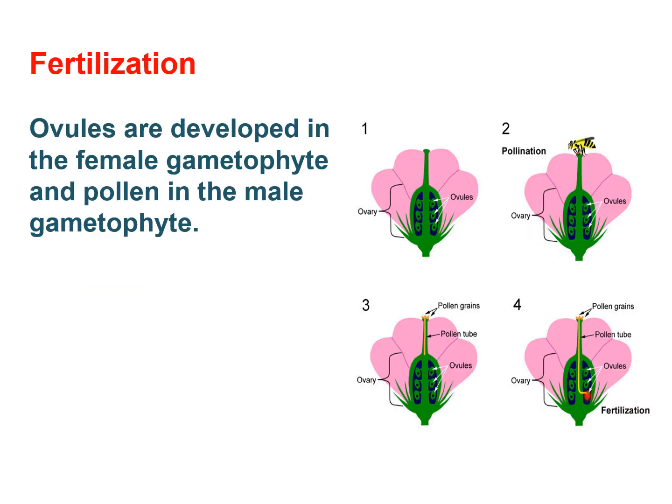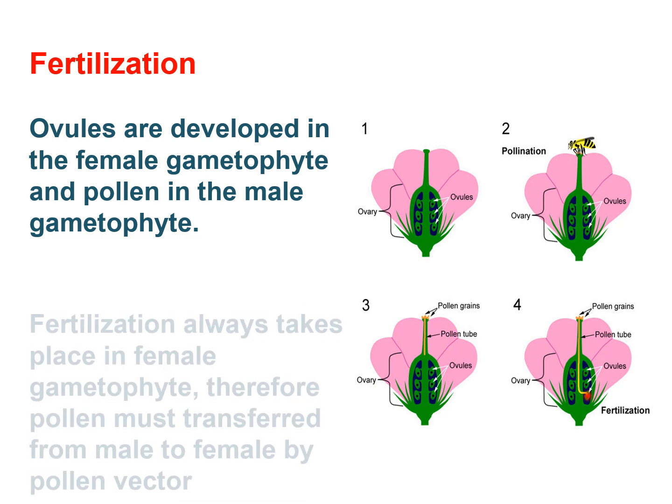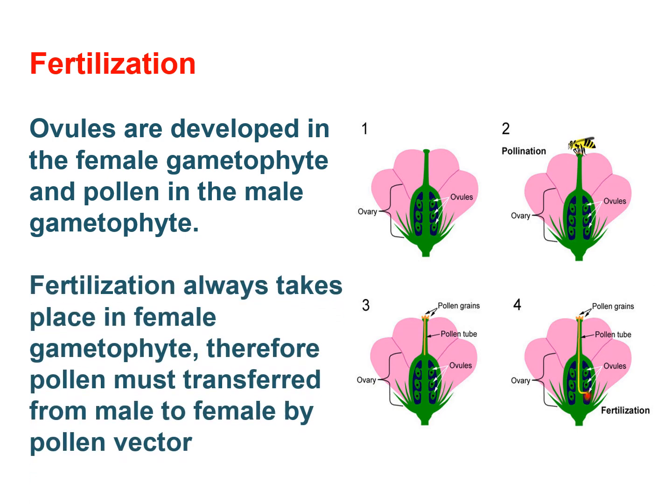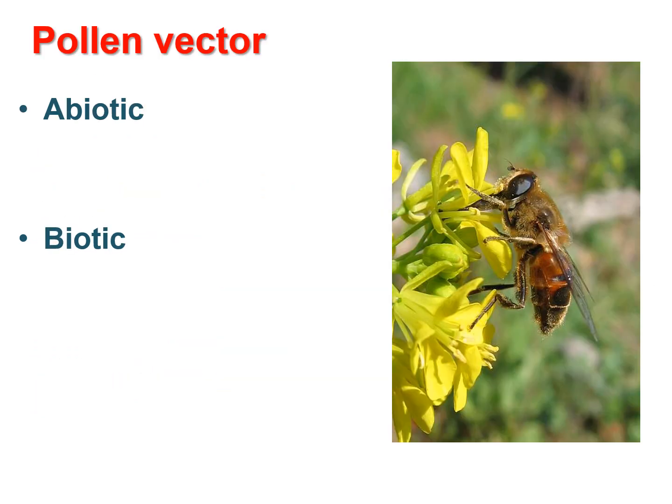Fertilization: Ovules are developed in the female gametophyte and pollen in the male gametophyte. Fertilization always takes place in the female gametophyte. Therefore, pollen must be transferred from male to female by a pollen vector.